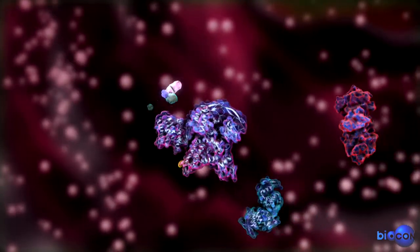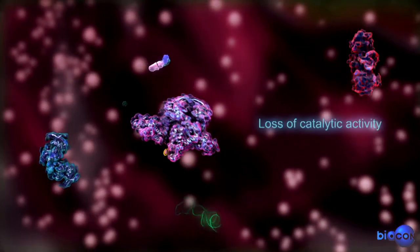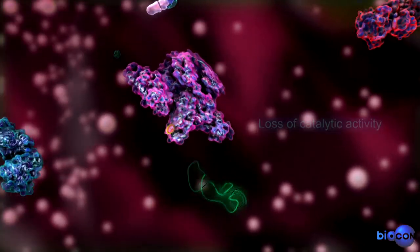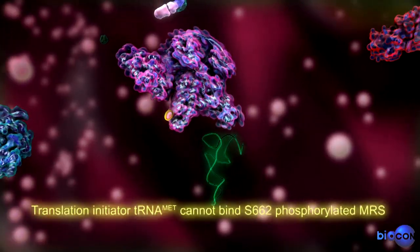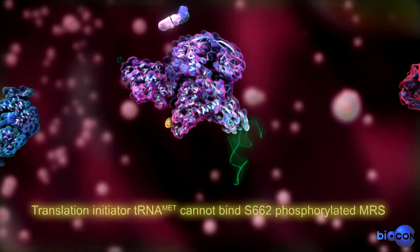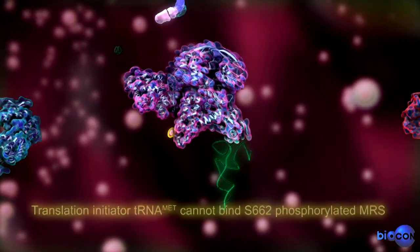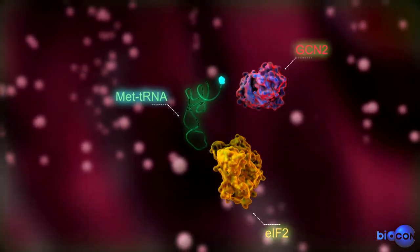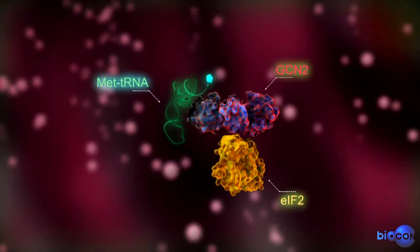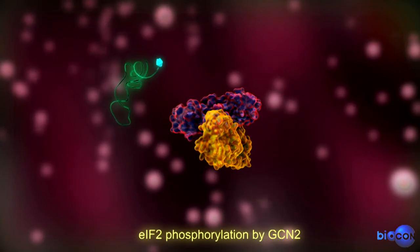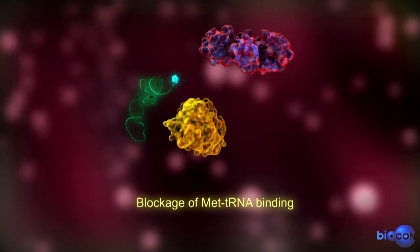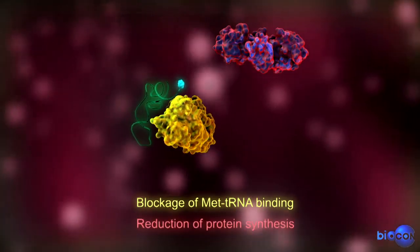Phosphorylated MRS also loses binding activity to the tRNA initiator, and therefore it doesn't bind to the methionine-charged tRNA initiator. In addition, GCN2 also phosphorylates EIF2, which induces a conformational change of EIF2 and causes it to lose its binding activity with methionine-charged tRNA.